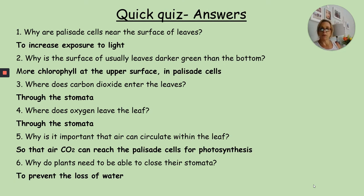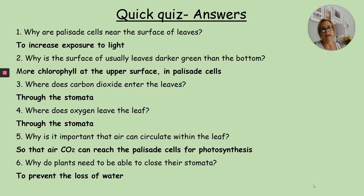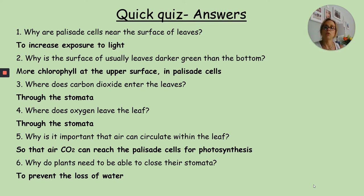We talked about all of these in the last lesson in this series. The first one was on photosynthesis and chloroplasts. Palisade cells are near to the surface of leaves, and that allows them to absorb the most light possible because the light doesn't have to travel through the leaf before it gets absorbed. The surface of leaves is usually darker than the underside because there are more chloroplasts in the palisade cells at the top surface.